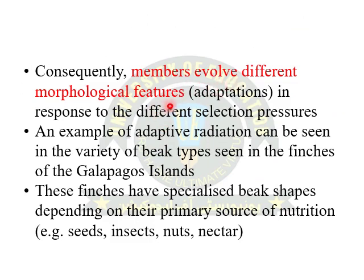Consequently, the members evolved different morphological features — also called different morphological adaptations — in response to different selection pressures. If we talk about examples of adaptive radiation, we can see a variety of beak types in the finches of the Galapagos Islands. The finches of Galapagos Island have about 13 different species of beaks that were evolved according to their feeding behavior.